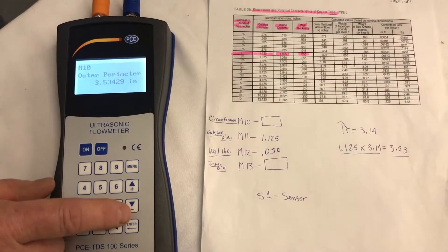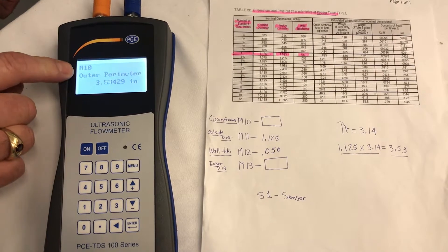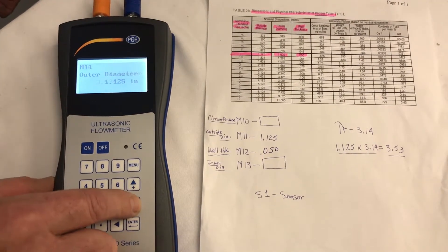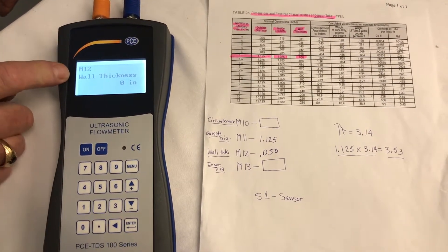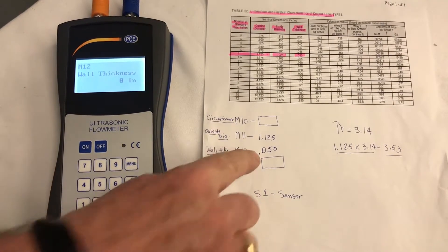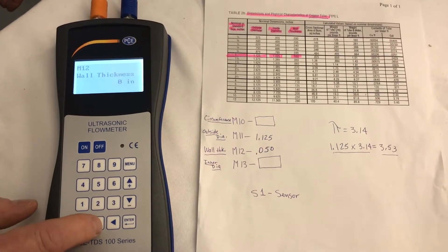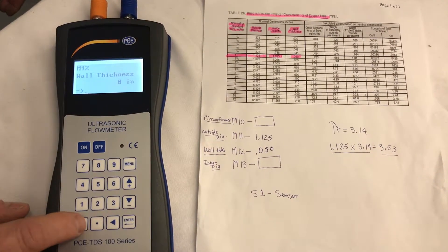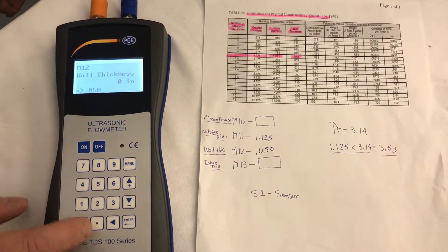So on our meter, we go to ILM-12. Right now we're on ILM-11, so 11, 12. ILM-12 is the wall thickness. We want to put in .050, enter.